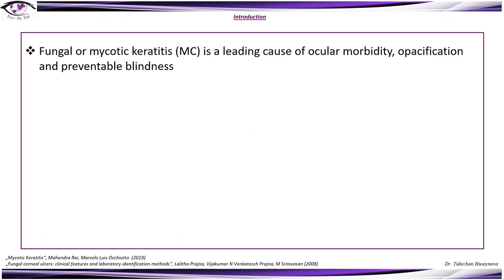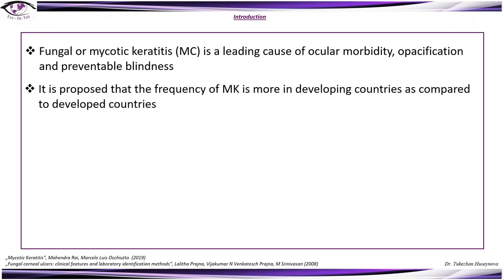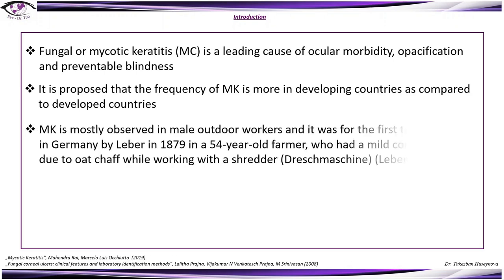Fungal or mycotic keratitis is a leading cause of oculo-morbidity, opacification, and preventable blindness. It's proposed that the frequency of this type of keratitis is more in developing countries as compared to developed countries. It was first described in Germany by Leber in 1879 in a 54-year-old farmer.